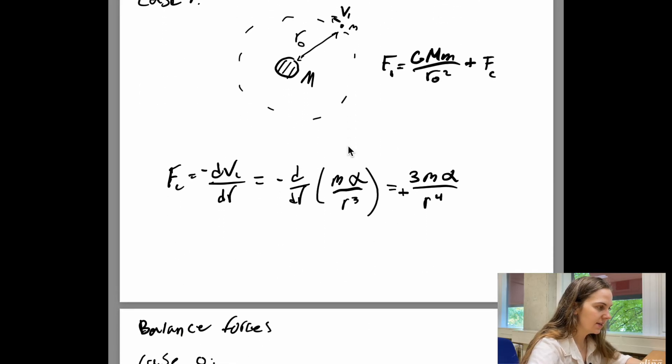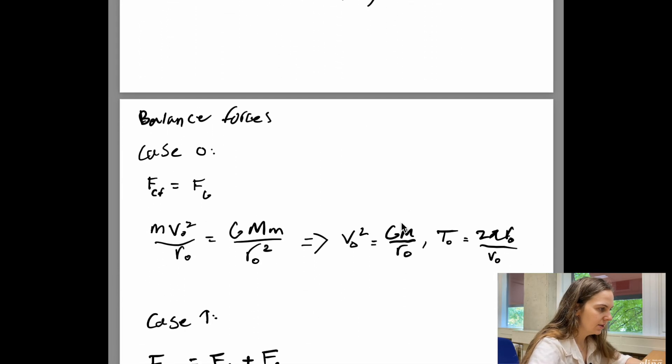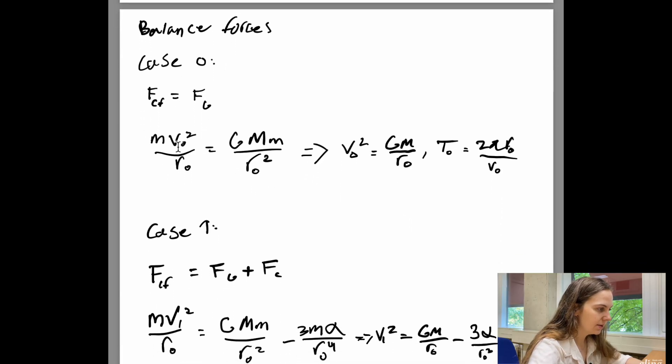So what we want to do is that we want to work out an expression for the two speeds v0 and v1. So in case zero, we just have gravitational force balanced by the centrifugal force. So we get that m times v0 squared over r0 is just G times capital M times m over r0 squared, which gives us that v0 squared is just G times capital M over r0. The period for this orbit is just given by the circumference of the orbit, which is 2 pi times r0 over the speed of this particle, which is just v0.